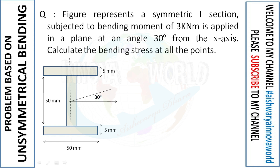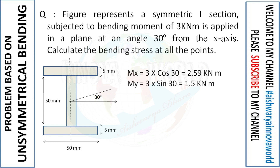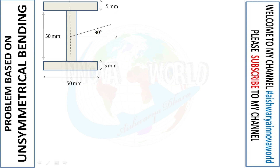The figure is displayed on your screen. From the x-axis, a 30-degree inclined plane has a moment of 3 kilo-Newton meters. From there, we can resolve the moments into the x-axis and y-axis. When we resolve, we get Mx equals 2.59 kilo-Newton meters and My equals 1.5 kilo-Newton meters — multiplying with cos 30 and sin 30 respectively.